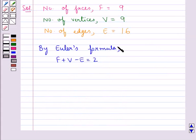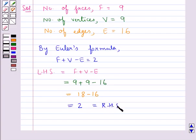By Euler's formula, we have F + V - E = 2. We will consider the LHS, that is F + V - E. Now we substitute the values for F, V, and E. This becomes 9 + 9 - 16, which is further equal to 18 - 16, and that equals 2, which is equal to the RHS of Euler's formula.